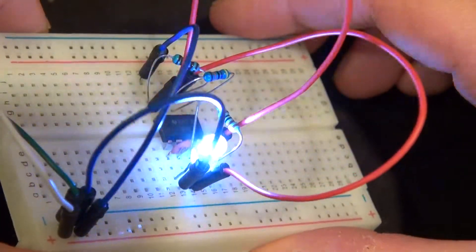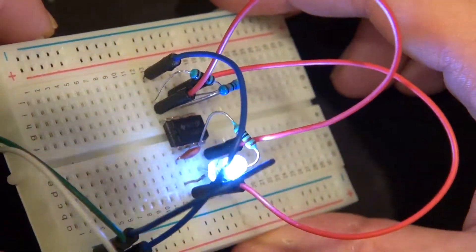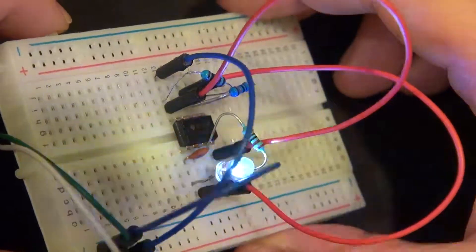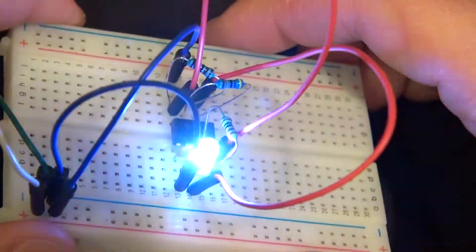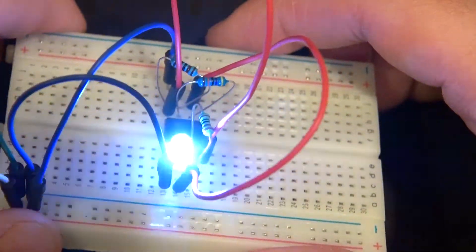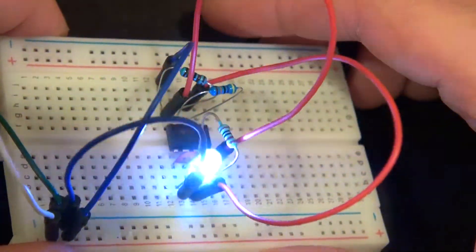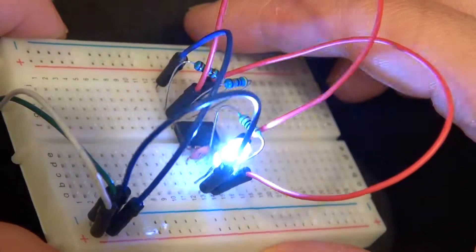And there you have it. A very simple flashing LED circuit using a 555 timer and using different capacitors to change the different blink rates. Thank you for watching Sci-Tai Tech. I hope you learned something new and don't forget to like and subscribe for more Sci-Tai Tech videos. Till the next Tech. Goodbye.